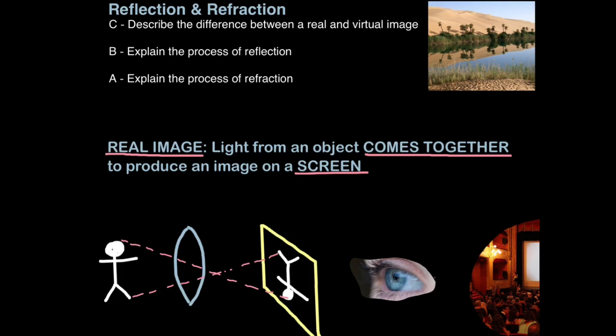Remember, real images are formed on a screen. So now let's look at reflection. You need to be a bit more sophisticated in your GCSEs. You can't just say reflection is when light bounces off an object, even if that's true. The more sophisticated definition is when waves hit a boundary of different density, some energy is reflected. That's the key idea. Energy is reflected.